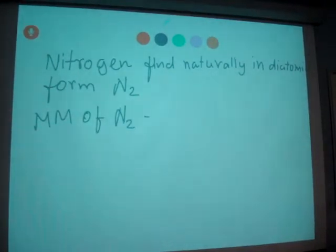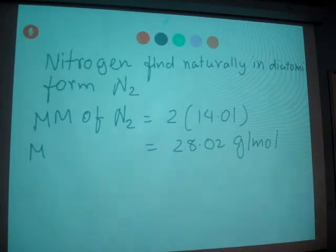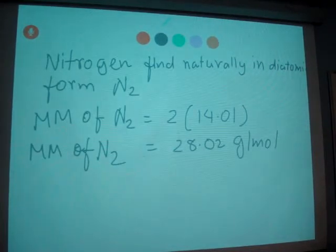So what we do? Two times whatever the atomic mass of nitrogen, which is 14.01, and you get 28.02 grams per mole. So that's the molar mass of N2.